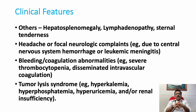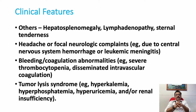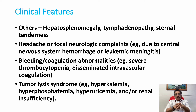Headache or focal neurological complaints can occur in central nervous system hemorrhages or leukemic meningitis. Bleeding or coagulation abnormalities include severe thrombocytopenia and disseminated intravascular coagulation. Tumor lysis syndrome can cause hyperkalemia, hyperphosphatemia, hyperuricemia, or renal insufficiency.